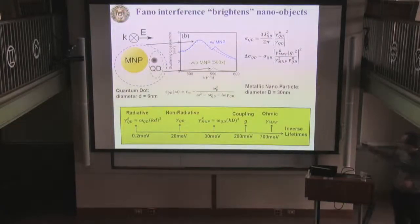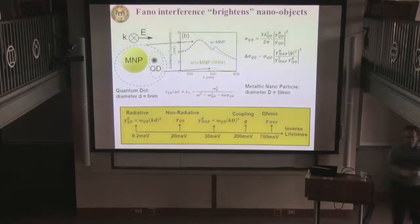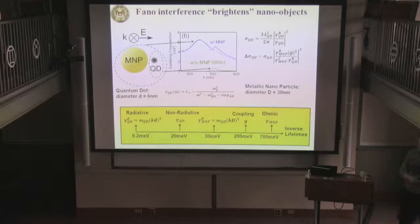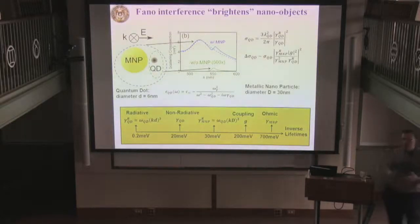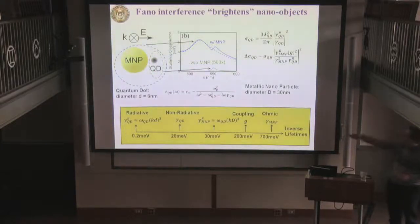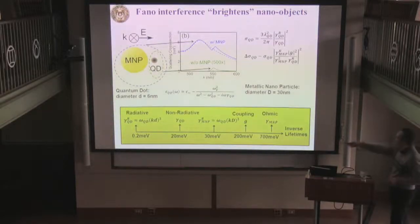This slide explains why Fano resonances are very interesting. In a single sentence: Fano interference can brighten very small objects. Those small objects could be a quantum dot or an atom. By placing a quantum dot in close proximity to a metallic nanoparticle, we can tremendously enhance the scattering produced by this quantum dot. This is a simple calculation: we assume a small quantum dot with a diameter of 6 nanometers and look at its scattering.